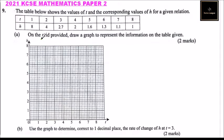Question number nine. The table below shows the values of t and the corresponding values of h for a given relation. So t we have 1, 2, 3, 4, 5, 6, 7, 8, and h we have 8, 4, 2.7, 2, 1.6, 1.3, 1.1, and 1.